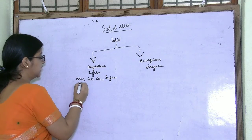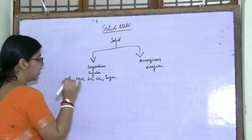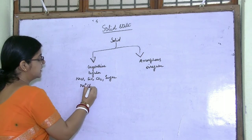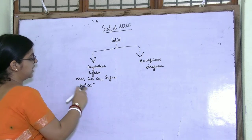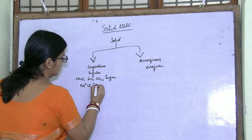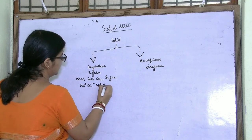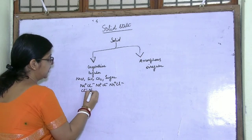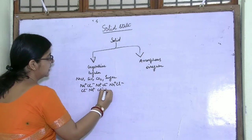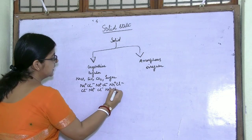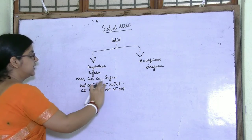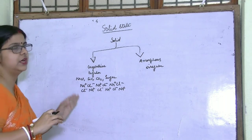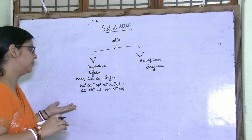If you want to understand how the particles are arranged in NaCl — the constituent particles are Na⁺ and Cl⁻. The arrangement goes: Na⁺, Cl⁻, Na⁺, Cl⁻ in one row, and Cl⁻, Na⁺, Cl⁻, Na⁺ in the next. Like this, it follows a regular arrangement and forms a definite pattern.